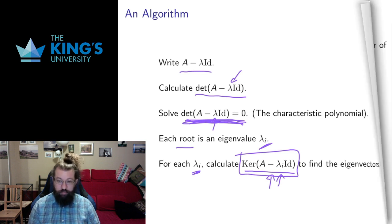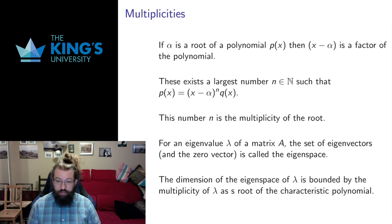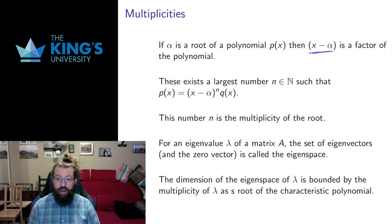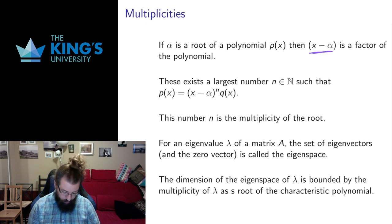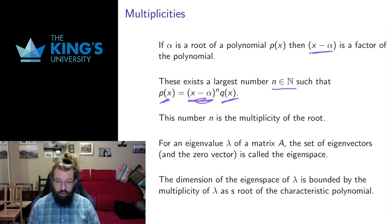Next I want to talk about multiplicities. If alpha is a root of a polynomial, that is equivalent to saying x minus alpha is a factor of that polynomial, and it may be possible to factor it out multiple times. There exists some largest number n such that the polynomial contains (x minus alpha)^n as a factor, but the remaining quotient q does not have x minus alpha as a factor — equivalently, alpha is not a root of q. This number n is called the multiplicity of the root.